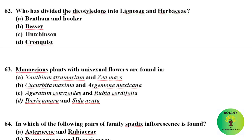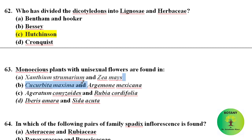Who divided dicotyledons into Lignosae and Herbaceae? It was Hutchinson who divided dicotyledons into these two major groups. Monoecious plants with unisexual flowers are found in Xanthium strumarium, family Asteraceae.